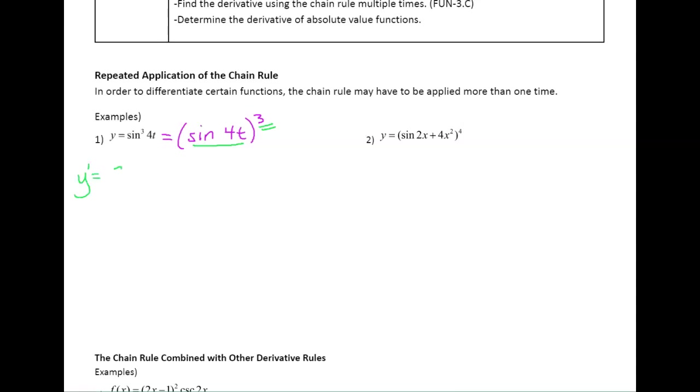So y prime, you bring the three down, the inside stays the same, and subtract one. Now we need to go back and take the derivative of this inside, which is another chain rule because you have its inside and sine is on the outside. So for this chain rule, sine is on the outside, so you're going to start with the trig derivative. The derivative of sine is cosine. Its inside stays the same, and then we multiply by the derivative of its inside. So we really did a chain rule twice, but if you start talking to yourself the way that I'm talking to you, I think it makes it a lot more reasonable and understandable.